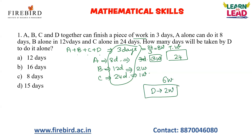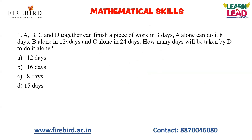In one day D does two units, so to complete 24 units of work, D will take 12 days — that is your answer. You should know the LCM concept. You can also solve this by the formula method, but it will take a long time. If you know the LCM concept thoroughly, it is very easy.